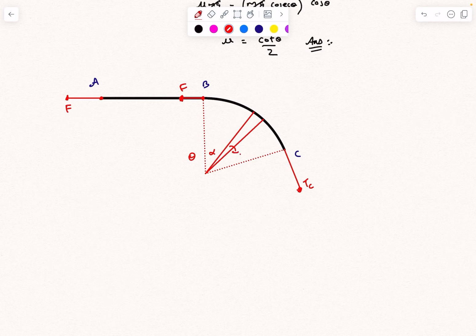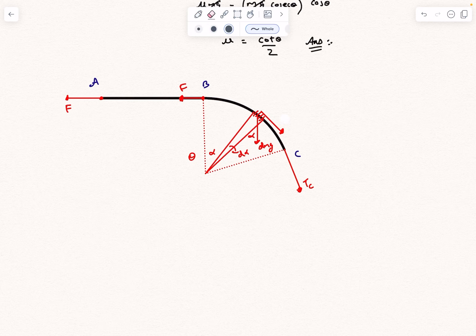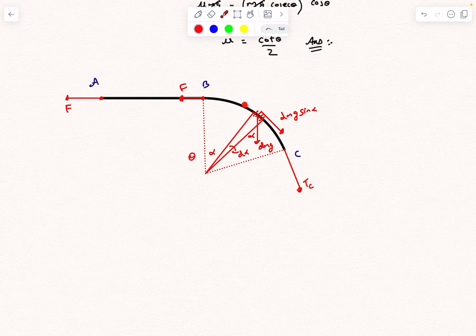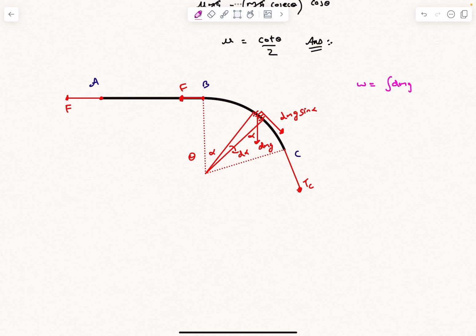If you observe the section BC, the tension force T_C will act over here. Let's say at some particular angle of alpha, I take a differential angle of dα and I observe this particular element. So it'll have its weight dMG acting in the vertically downward direction. This angle is alpha as well. So the weight component along the rope is dMG sin α. If I want F, it is going to be nothing but T_C plus this dMG sin α integrated over this part BC. So what we are trying to figure out is integral of dMG sin α. Now dM I can write as λ times dL. This is going to be integral of dL sin α.